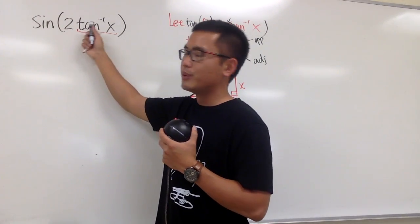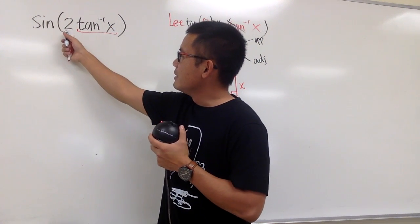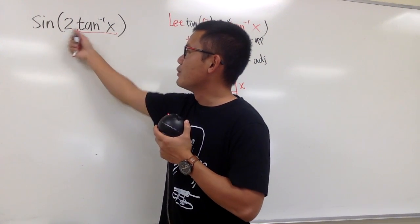This is sin(2 tan⁻¹x). This can be looked at as 2θ, sin(2θ).